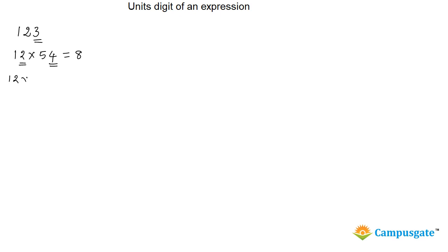Similarly, if you take a bigger number like 12 multiplied by 54 multiplied by 76 and you want to find the unit's digit of this expression, you see the first two numbers — if you multiply them, the unit's digit is 8. So you can simply multiply 8 into 6, because the unit's digit of those two numbers is 8. So 6 into 8 is 48, and again you will get 8 as the unit's digit.